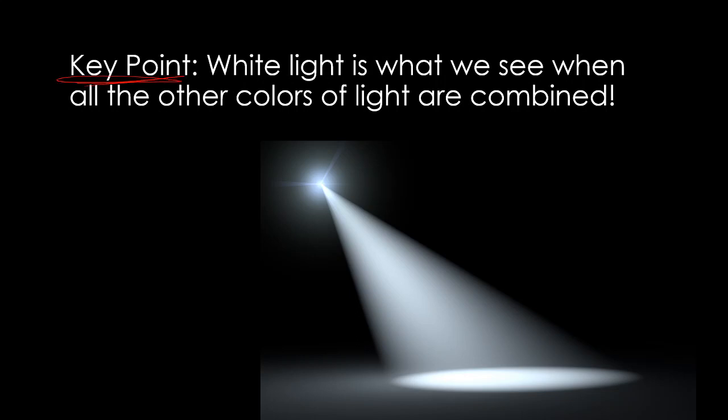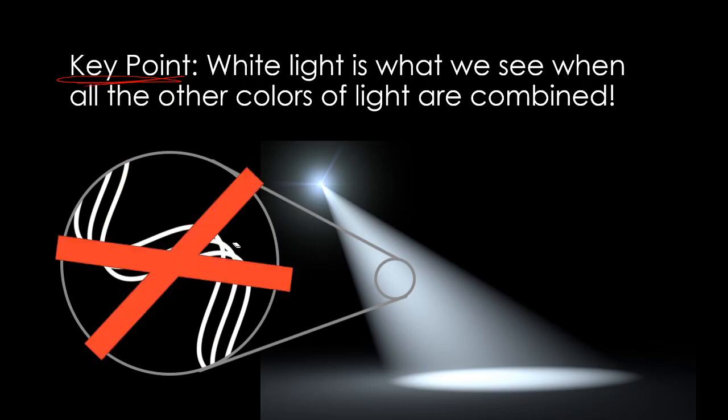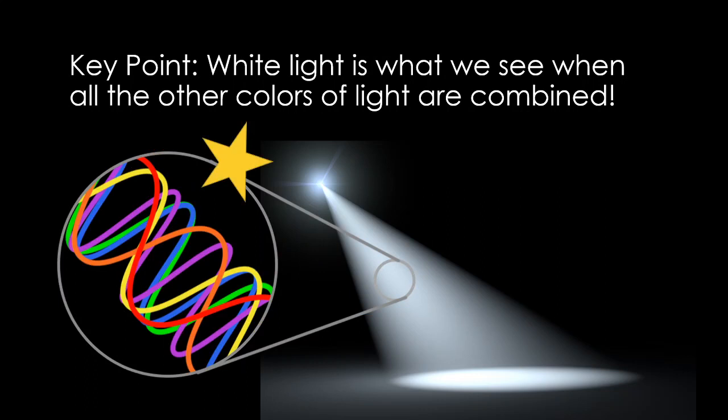Here's the key point from all of that, and definitely what you want to get down into your notes. White light is what we see when all the other colors of light are combined. When we have a spotlight like this that's shining white light, you might think, like based on our lesson yesterday, that if you zoomed in really close in that white light, what you would see are white light waves. But that's not true. There's no such thing as a white light wave. They don't exist. Instead, what you would see, if you zoomed in on this light, is all of the other colors of light, all of their waves, all combined together. And when all of those different colors of light mix together, then what we see is this bright white light.